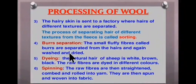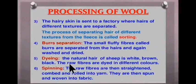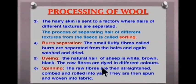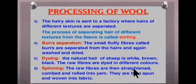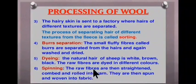The next step is dyeing. The natural hair of sheep is white, brown or black, so in order to get the desired color, the raw fibers are dyed in different colors. Then comes spinning — the raw fibers are straightened by the process of carding. Carding is the process by which raw wool fibers are separated and prepared for spinning. The raw fibers are then straightened, combed and rolled into yarn, and then spun and woven into fabric.